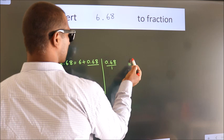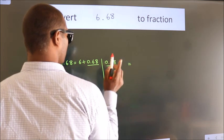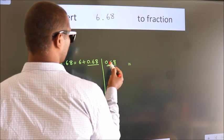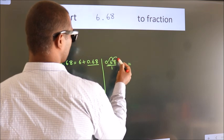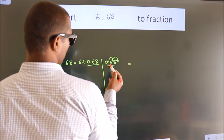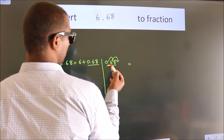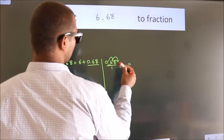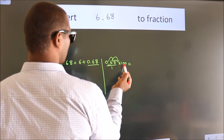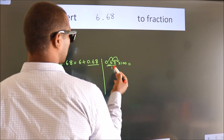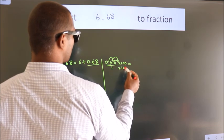To convert this to fraction, for that we have to move this decimal after 1, 2 numbers. To move this decimal after 2 numbers, multiply it with 100. Whatever you are multiplying in the numerator, in the denominator also do the same.